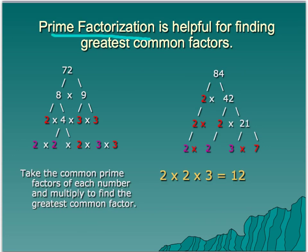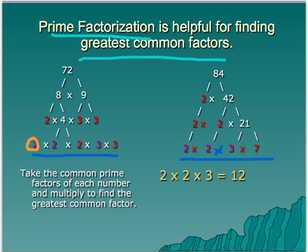Prime factorization can also be used to find the greatest common factor. We find the prime factorization for both numbers — 72 and 84 — to find their greatest common factor. 72 is 2 times 2 times 2 times 3 times 3, and 84 is 2 times 2 times 3 times 7. What they have in common is 2, 2, and a 3. Multiplying those together, 2 times 2 times 3 equals 12. You take the common prime factors of each number and multiply them together to find the greatest common factor.